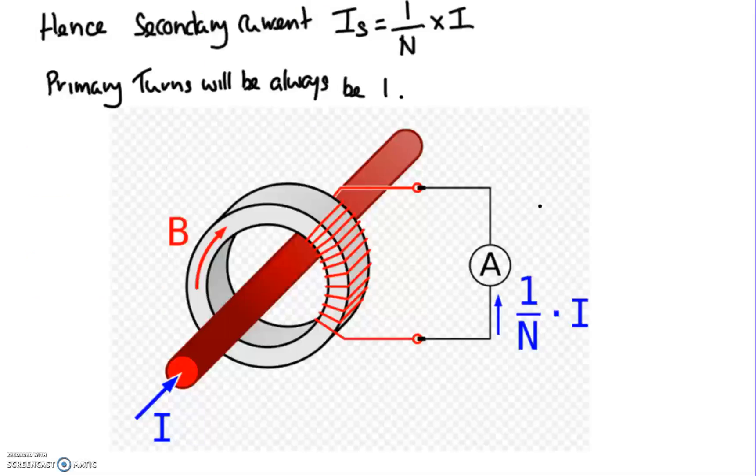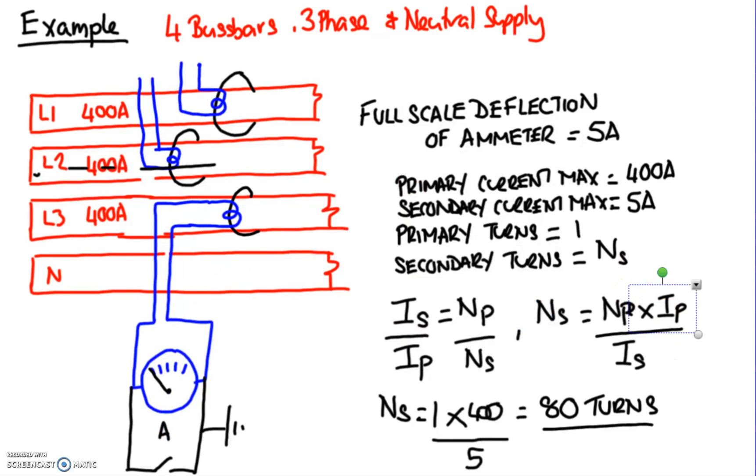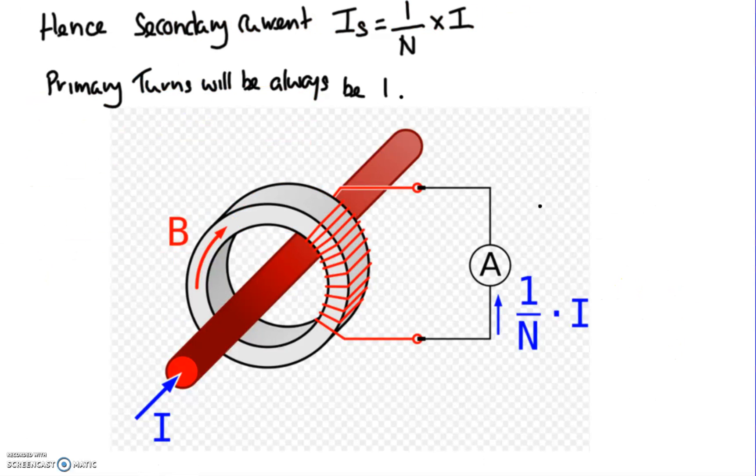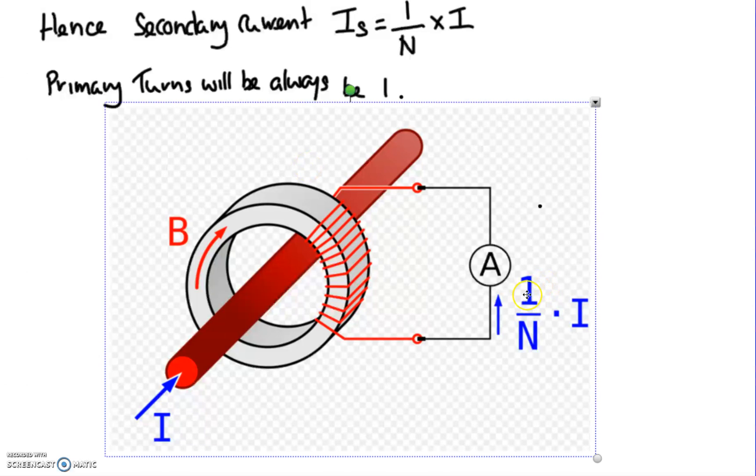Another way of working this out, following on from that particular formula for a current transformer: we know that the primary is always going to be one, so the secondary current IS equals 1 divided by N times I, where N is the number of turns and I is the current flowing through the primary.